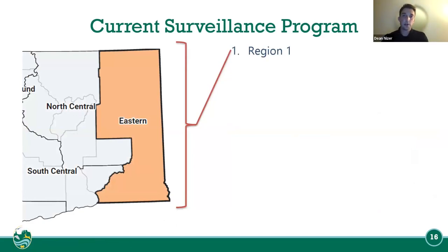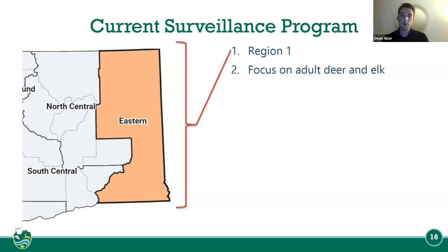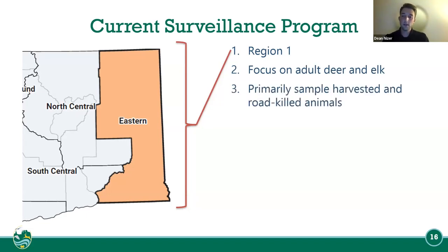Our current surveillance program covers the whole eastern side of the state — Region 1. It focuses on adult deer and elk primarily, as those are the main species on the east side. We do have moose come through, but deer and elk are our main focus.